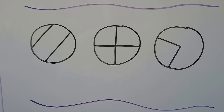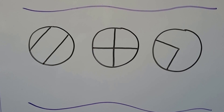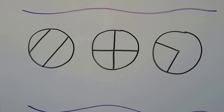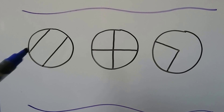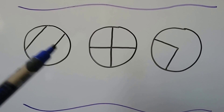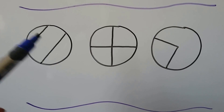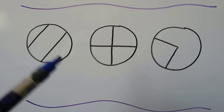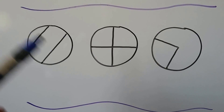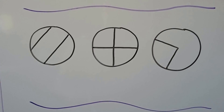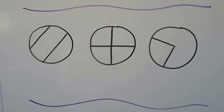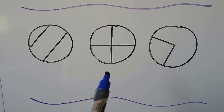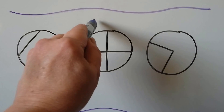Here we have some circles. Which ones show equal parts? This one has a little piece and then a bigger piece, so right away you can see the pieces are different sizes, so it's not that one. Does that show equal parts, equal shares — the middle one? Yes, it does, doesn't it?